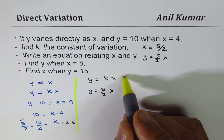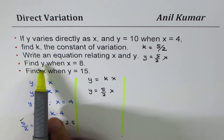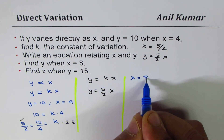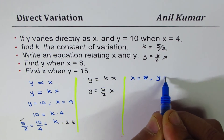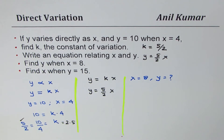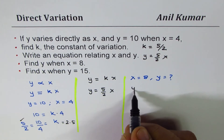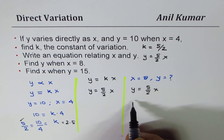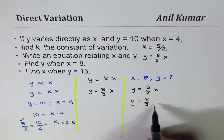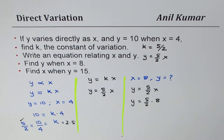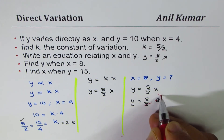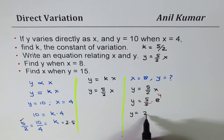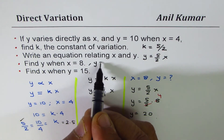Now let's do the next part, which is find y when x equals 8. We begin with the equation we derived: y equals 5 over 2 times x. Replace x with 8, so y equals 5 over 2 times 8. We can simplify: 2 goes into 8 four times, so y equals 5 times 4, which is 20. So for x equals 8, y equals 20.